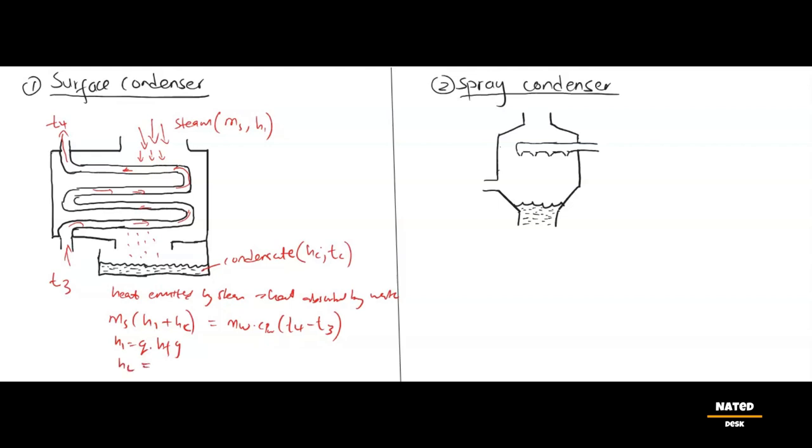hc is heat enthalpy of the condensate, which equals cpw(ts - tc), where cpw is specific heat capacity of water at 4.187 kJ per kg kelvin. cpw is always this value, never changes.